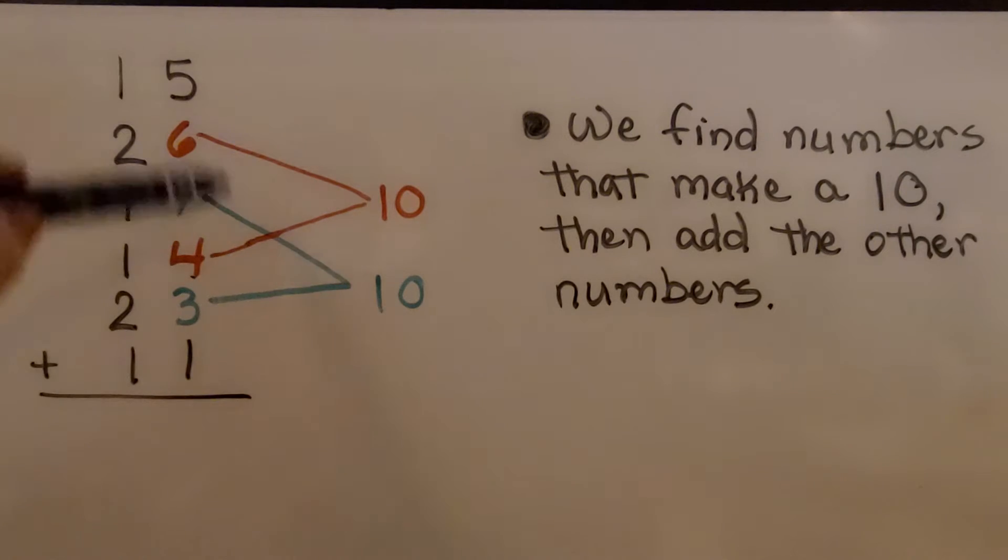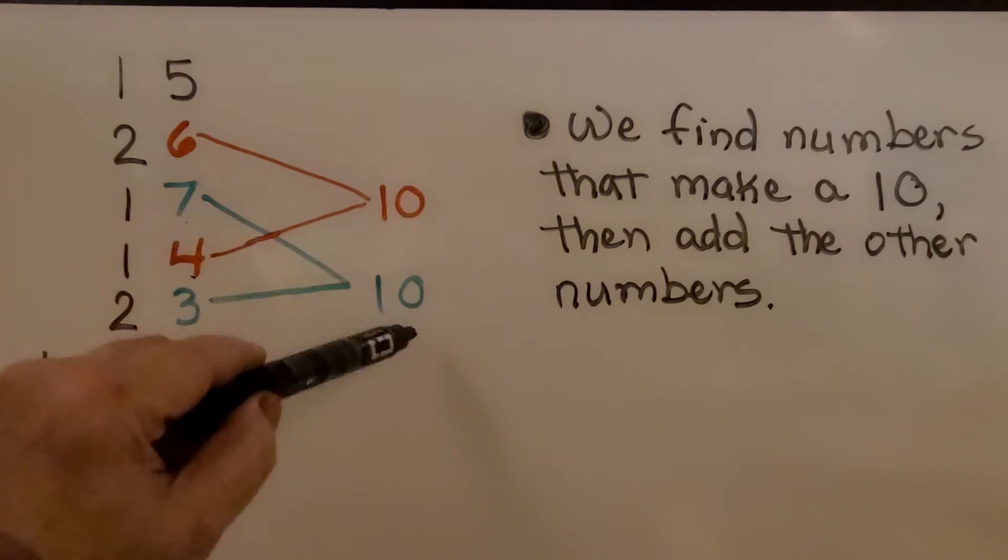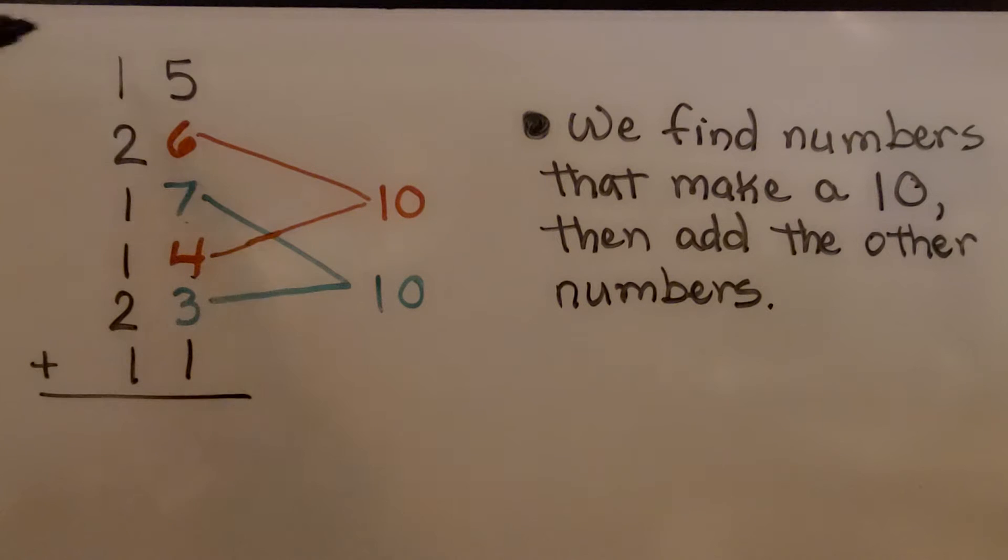And we have a 5 and a 1 left over. We know we have 20, 25, 26. We regroup the two tens, put the 6 ones down. Then we add the tens column.